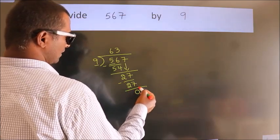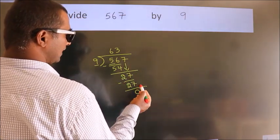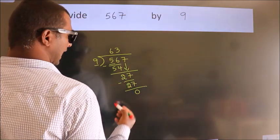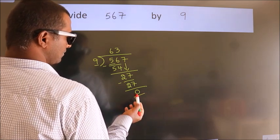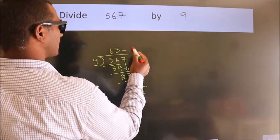After this, no more numbers to bring it down, and we got remainder 0. So, this is our quotient.